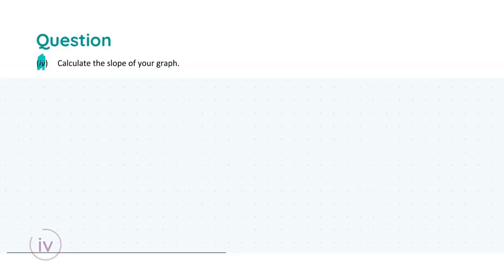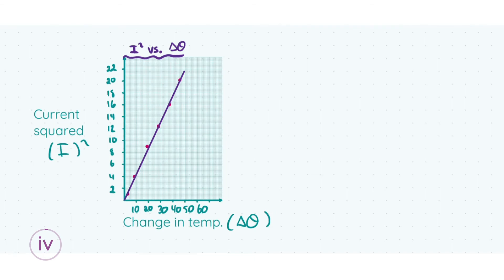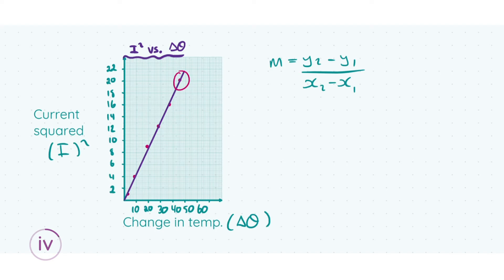Moving to part A(iv), we're asked to calculate the slope of our graph. We'll use the coordinate geometry formula from our log tables: m equals y2 minus y1, all over x2 minus x1. The important thing is that when plugging values into this formula, you pick points along the line of best fit — not the points you originally plotted — because some plotted points may be slightly off the line.